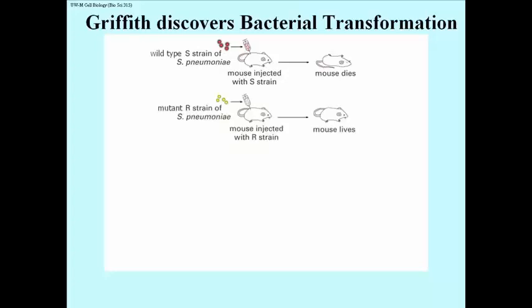There was a mutant strain called the R strain of S. pneumonia. The R stands for rough because the colonies that were produced would have a rough appearance. When these were injected into the mouse, the mouse survived.